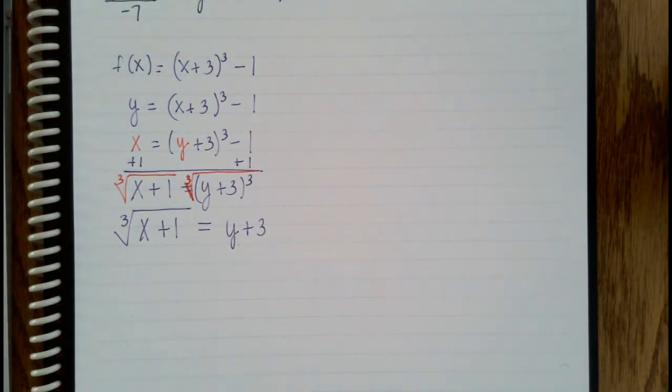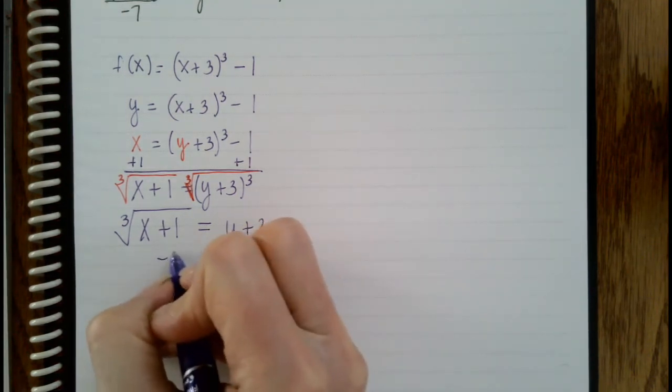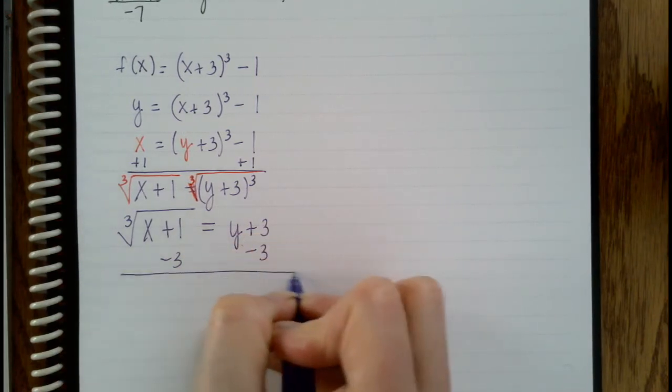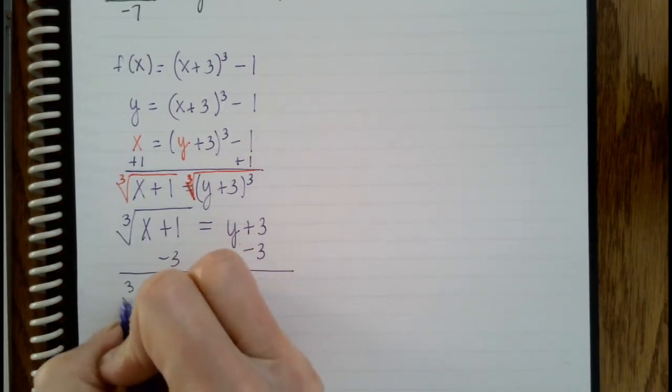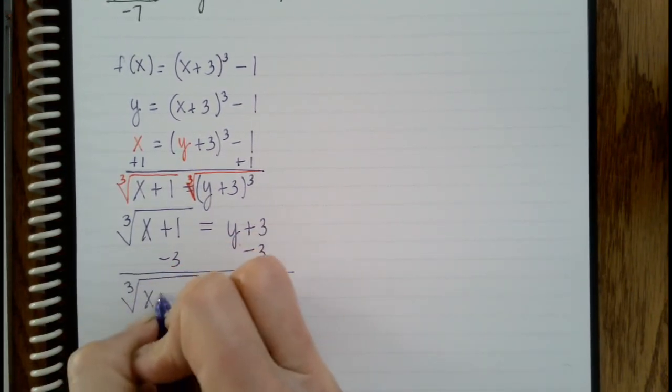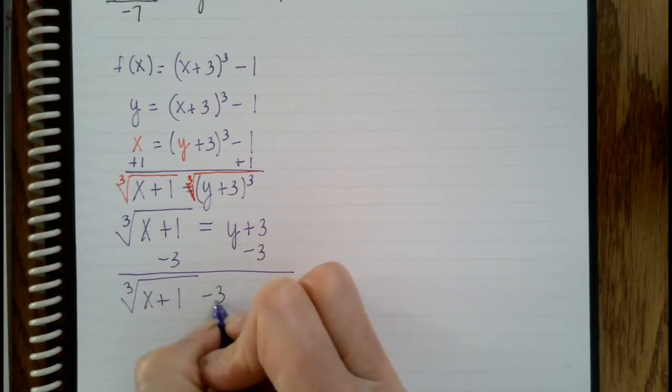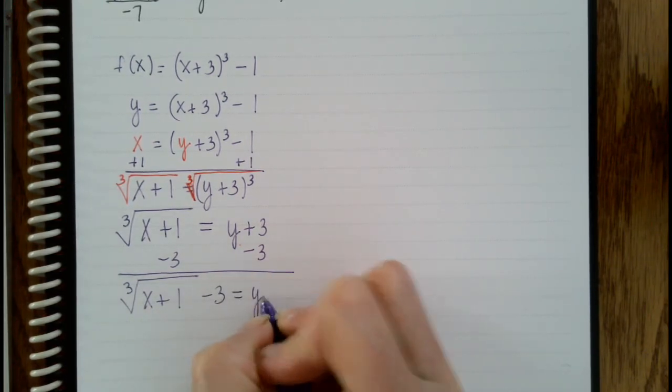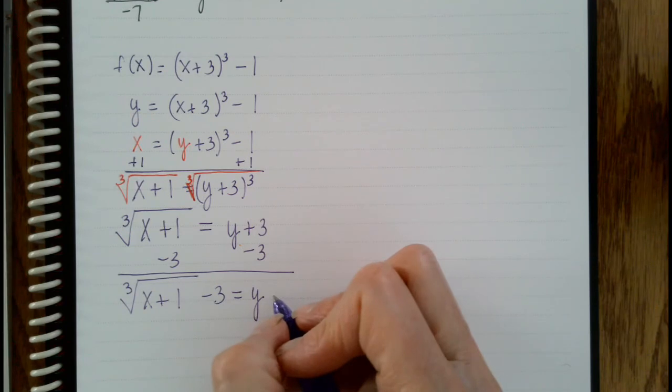And now we can separate those and solve for y to finish. We subtract 3 from both sides. And we get the cubed root of x plus 1 minus 3 equals y.